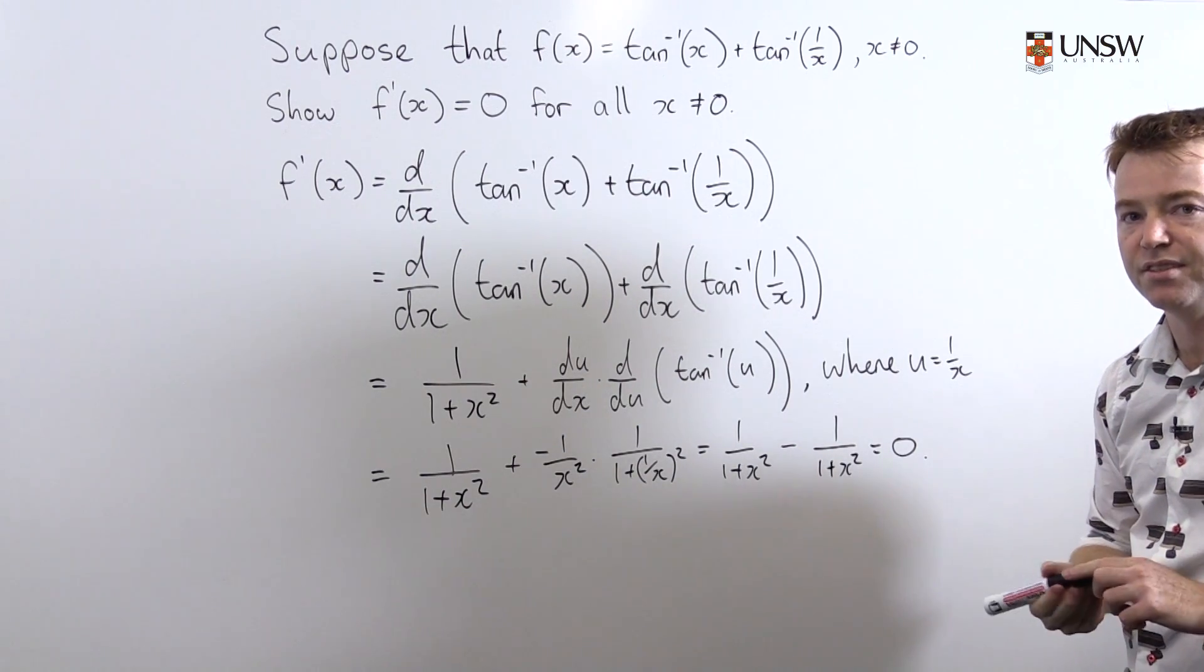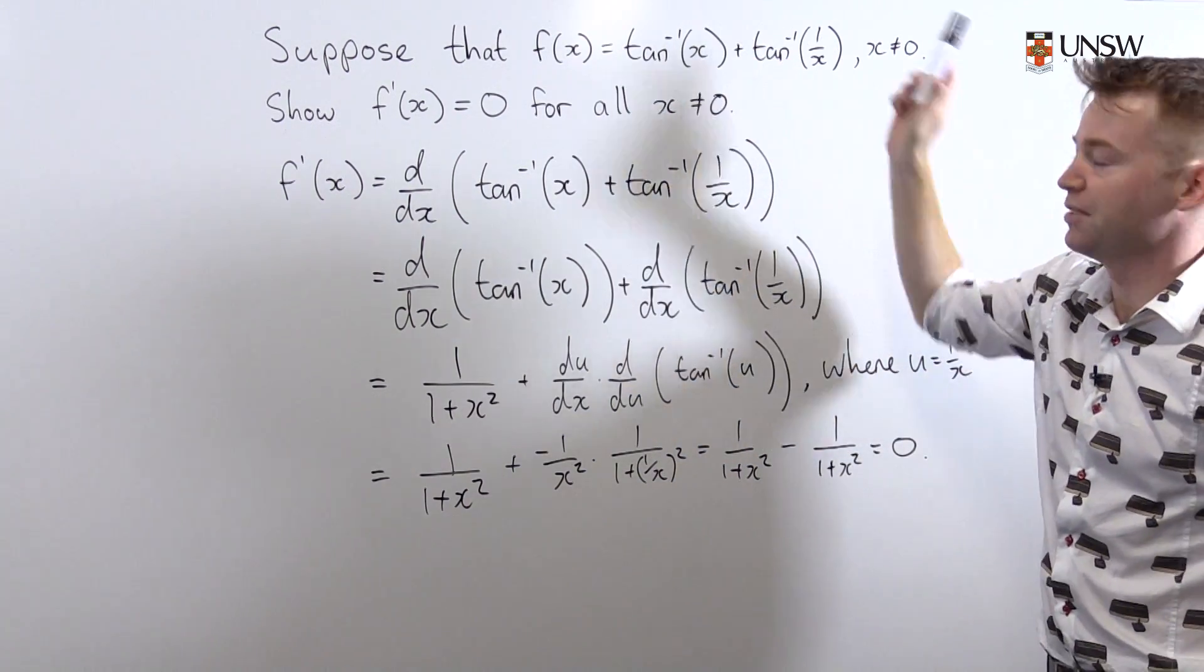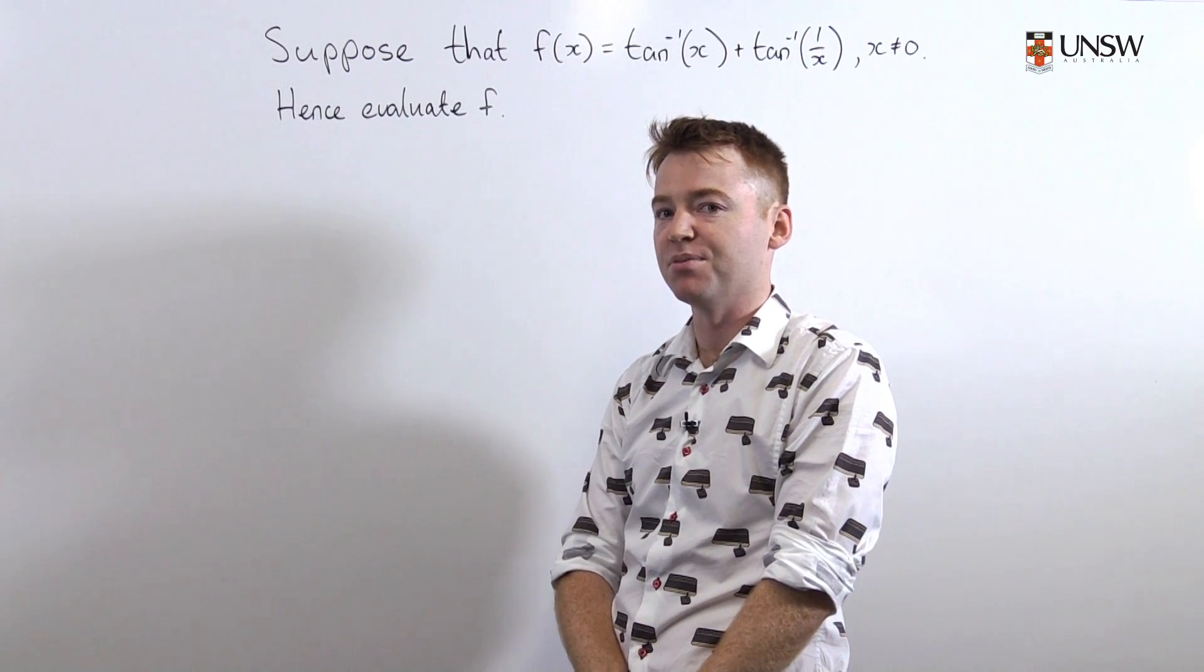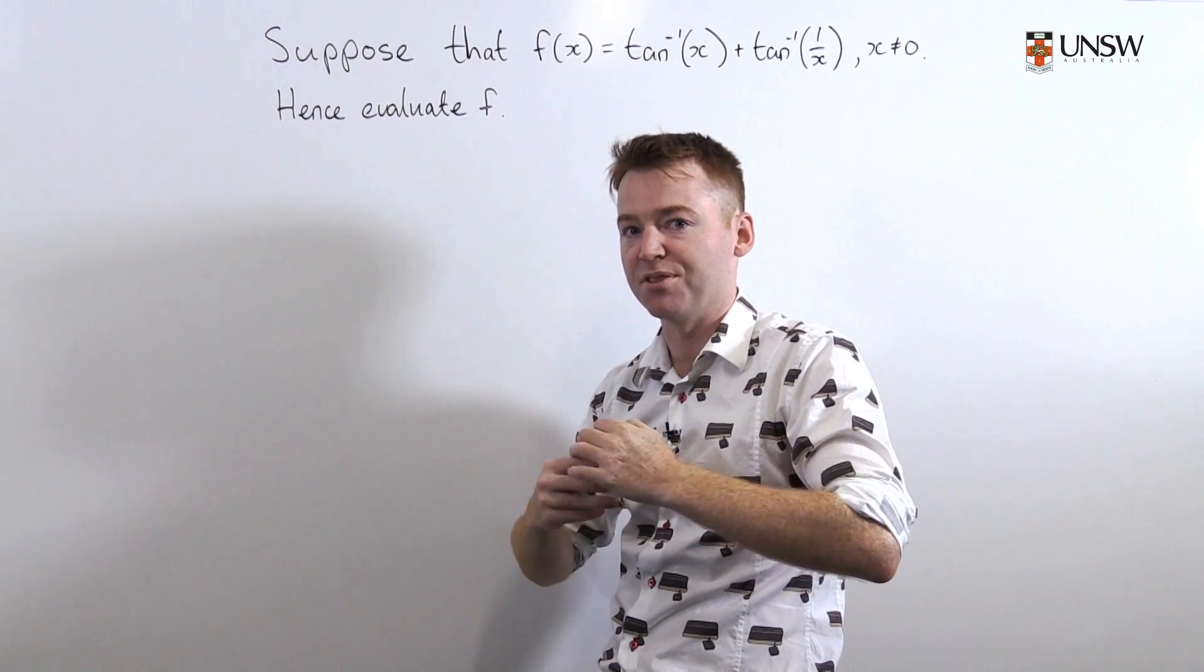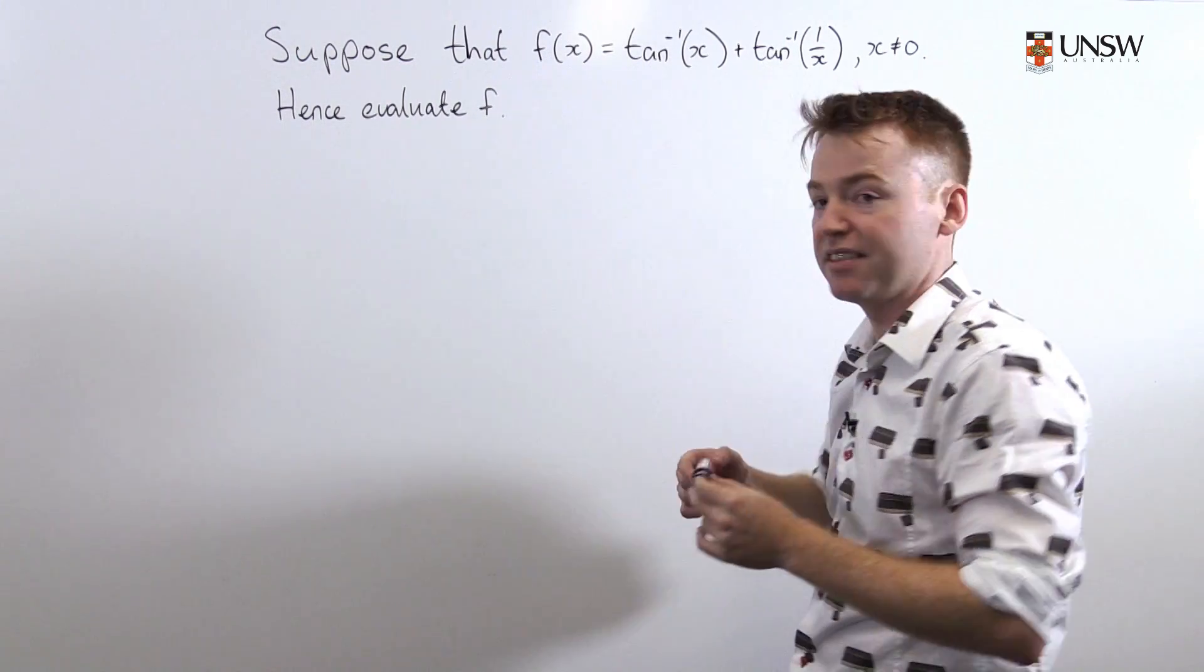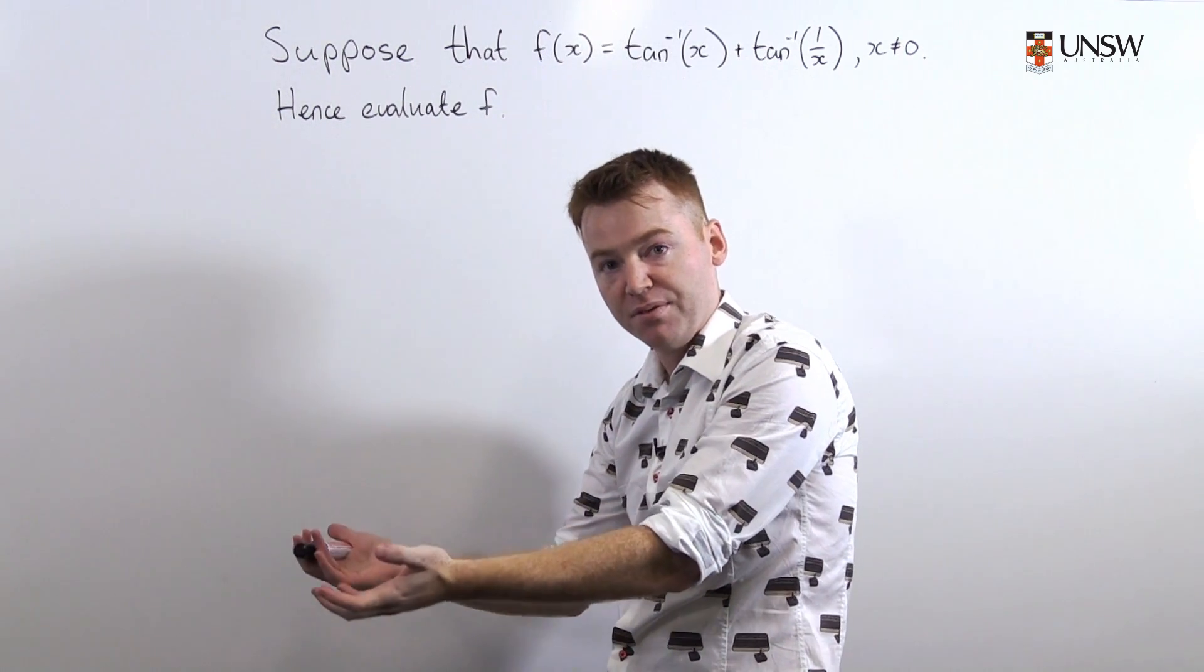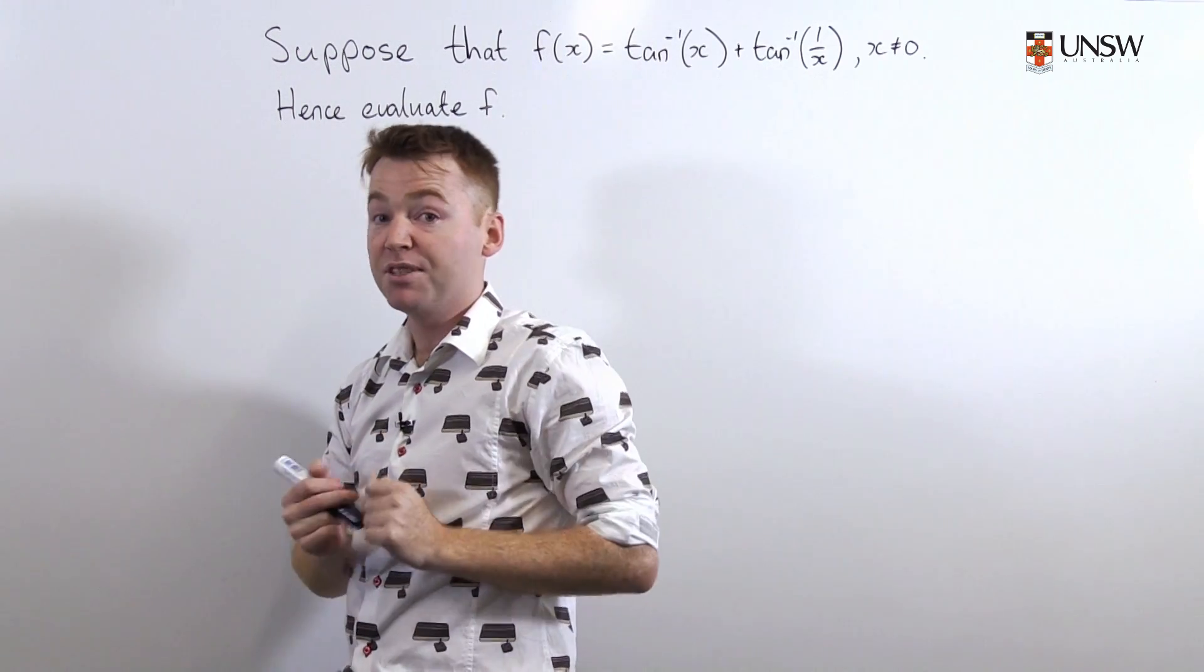And so the derivative is 0 except at x equals 0 when you have problems with the definition of this function. So we saw in our previous slide that the function f is constant everywhere except at x equals 0. But it's not clear that it's the same constant on either side of 0. There's this discontinuity at x equals 0. So on say the positive x-axis we can say the function has the same value. And on the negative x-axis it has perhaps a different value.